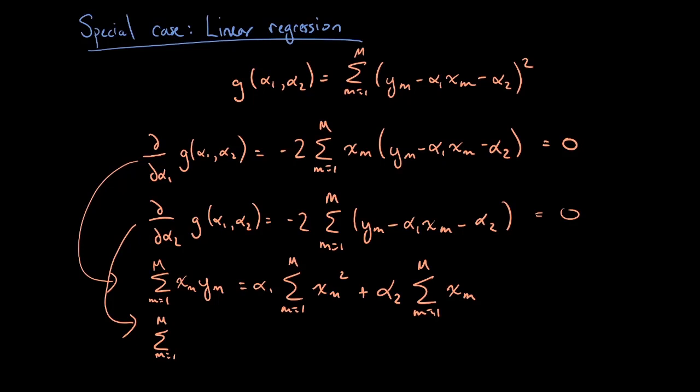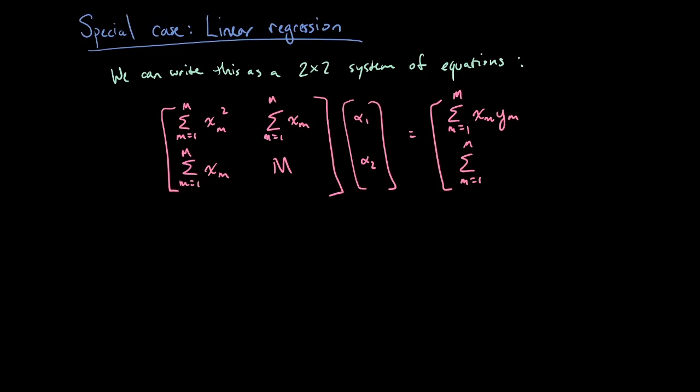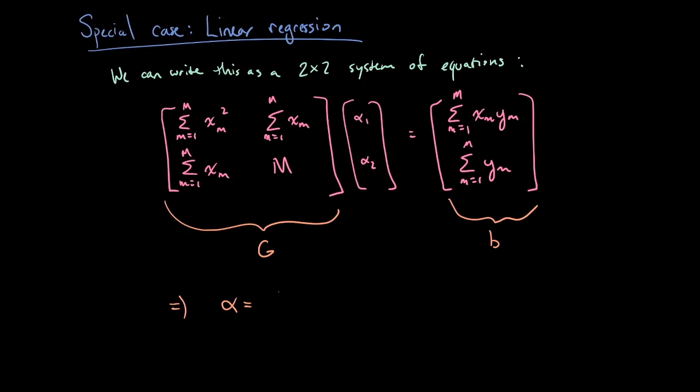We can repeat this process for the partial derivative with respect to alpha 2 and we get another equation that alpha 1 and alpha 2 have to satisfy. Now we have two equations and two unknowns, and we can express this as a 2 by 2 system of equations. The important thing to note is that everything in this system except for alpha 1 and alpha 2 we can just directly compute from our observations. We can compute this 2 by 2 matrix G, we can compute this 2 by 1 vector B, and we can obtain our estimate alpha simply by computing G inverse B. Since this is a 2 by 2 system, it's actually possible to get a closed form expression for what the coefficients look like because there's a relatively simple formula for the inverse of G. I'm not going to worry about doing that here. The important thing is just that once we get it down to this 2 by 2 system, it's easy to solve for the least square solution to the linear regression problem.